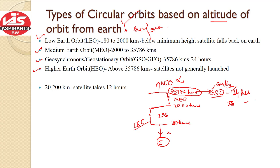So these are the types of circular orbits based on altitude. In the next lecture, we will discuss all of these orbits in detail — what kind of satellites are launched in each orbit. We will also learn about the sun-synchronous polar orbit, and discuss all that in the Part 2 lecture.